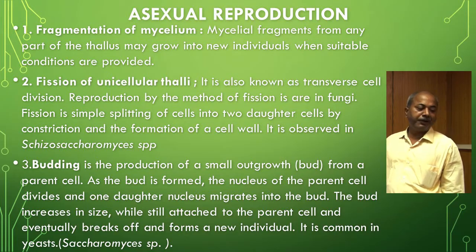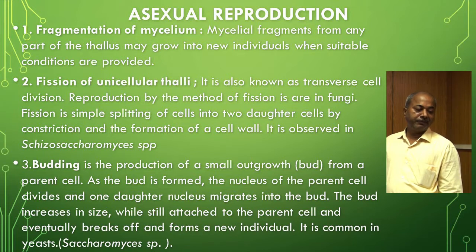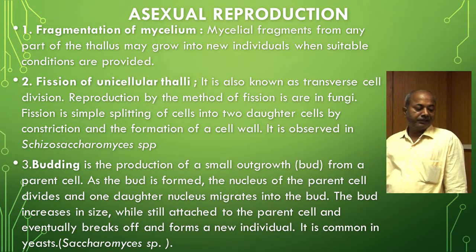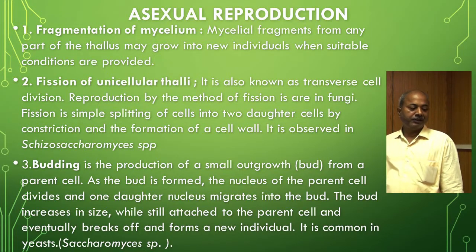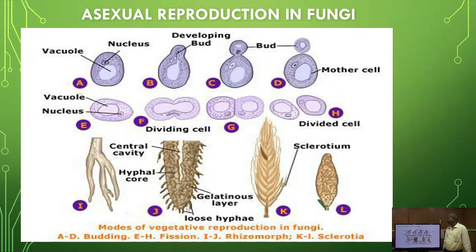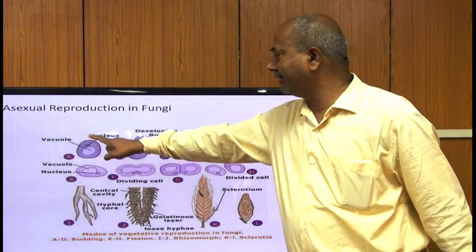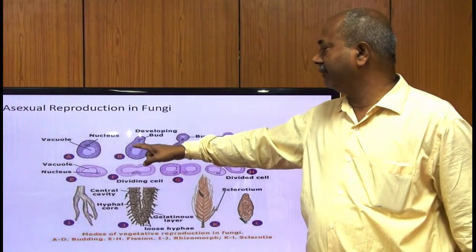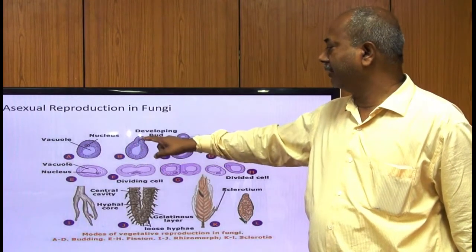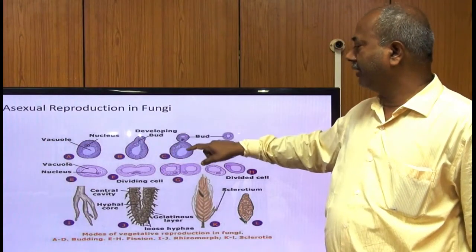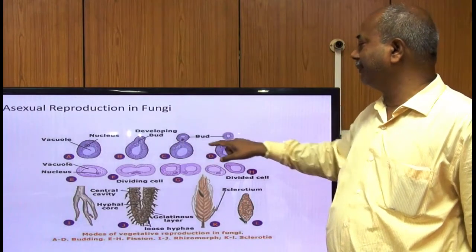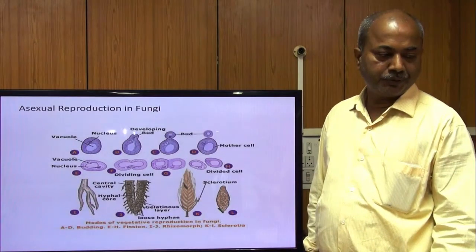Budding is the production of a small outgrowth called a bud from a parent cell. As the bud is formed, the nucleus of the parent cell divides and one daughter nucleus migrates into the bud. The bud increases in size while still attached to the parent cell and eventually breaks off to form a new individual. Budding is common in Saccharomyces species, that is, yeast.